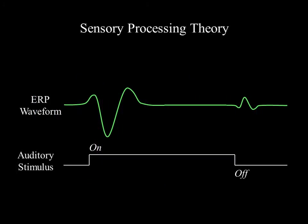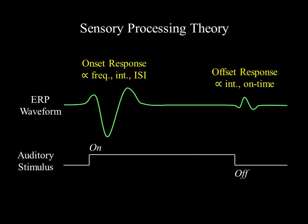Another theory, which is very simple, is that low-level features of sounds fundamentally shape the ERP waveform. The onset response is modulated by stimulus frequency, intensity or loudness, and inter-stimulus interval, while the offset response latency is determined by sound duration, and its magnitude is influenced by sound intensity and the duration of stimulus on time.